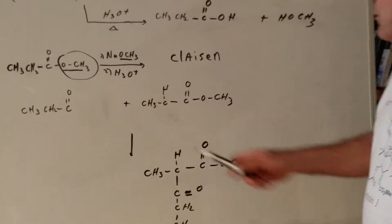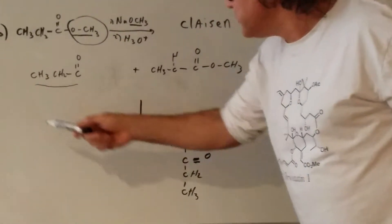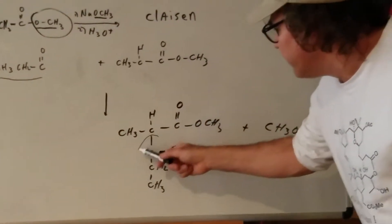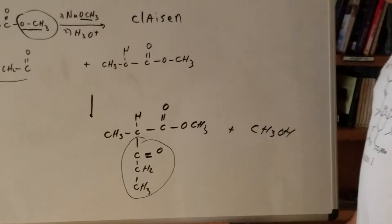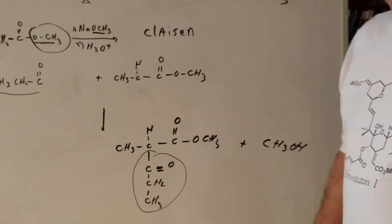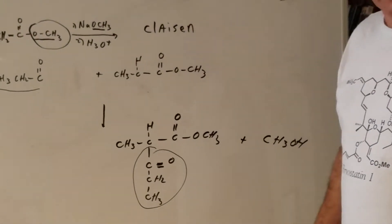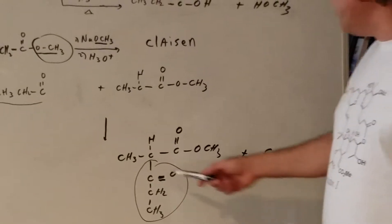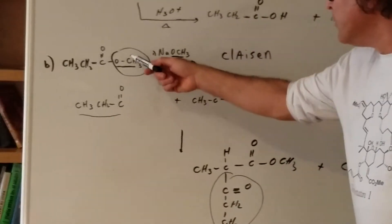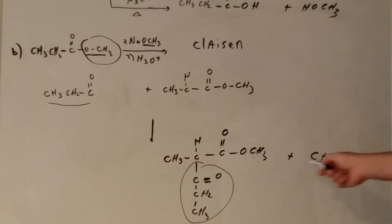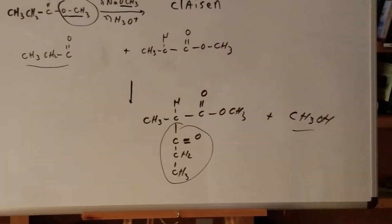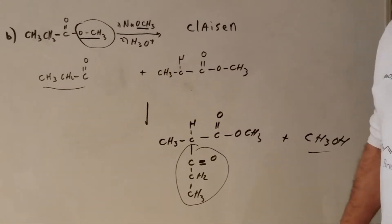And then I remove the alpha proton from the other. I'm going to now take this and add it to the alpha position. And that's all there is to it. That's a Claisen condensation reaction. And the groups that came off, the OCH3 and the H, simply went off as a small byproduct.